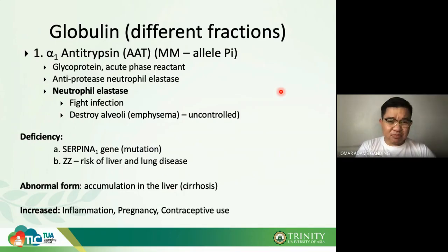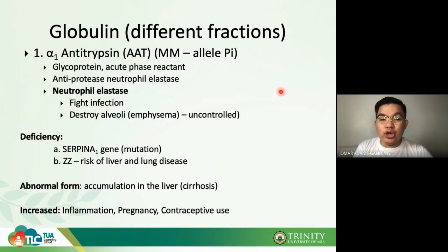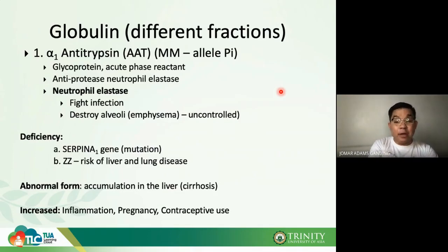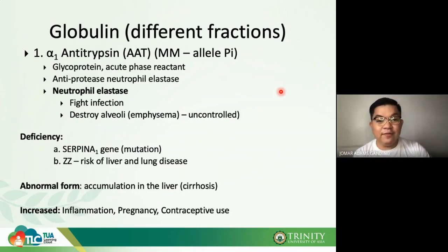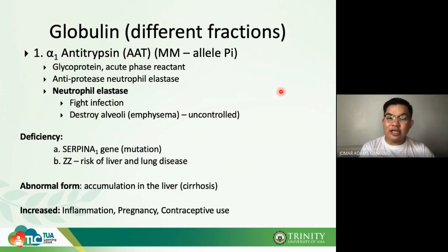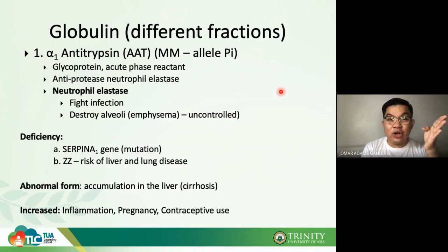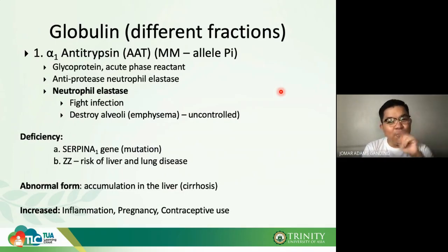Abnormal forms of alpha-1 antitrypsin can accumulate in the liver and are seen in cirrhosis. Alpha-1 antitrypsin is increased in inflammation — as a positive acute phase reactant — and also in pregnancy and contraceptive use. It is decreased in liver disease.